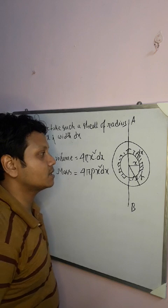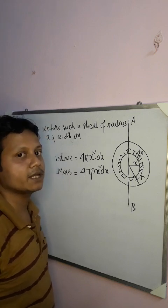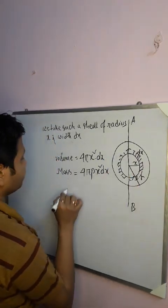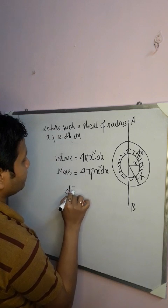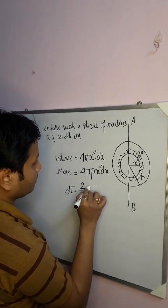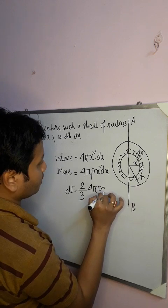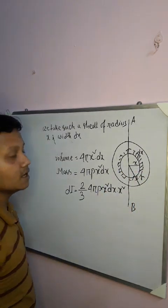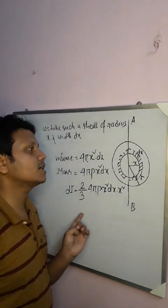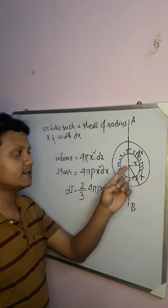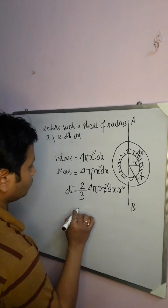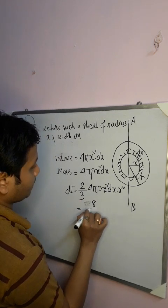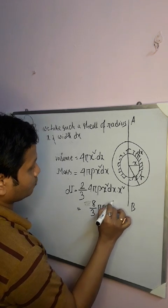From our previous calculation, the moment of inertia of a thin spherical shell is (2/3)MR². So the moment of inertia of the shell about AB is dI = (2/3)(4πρx² dx)(x²), where ρ is mass per unit volume. This simplifies to dI = (8/3)πρx⁴ dx.